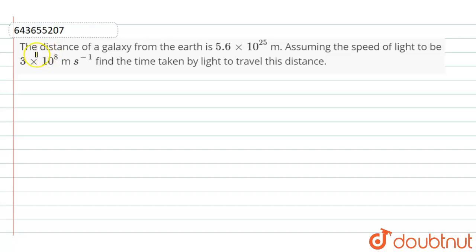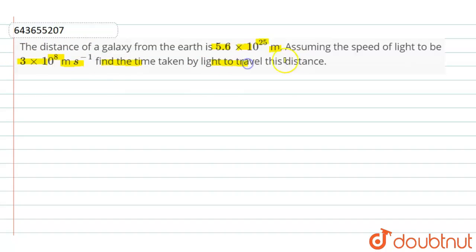Hello dear students, the question is: the distance of the galaxy from the earth is 5.6 into 10 raised to the power 25 meter. Assuming the speed of light to be 3 into 10 raised to the power 8 meter per second, find the time taken by the light to travel this distance.